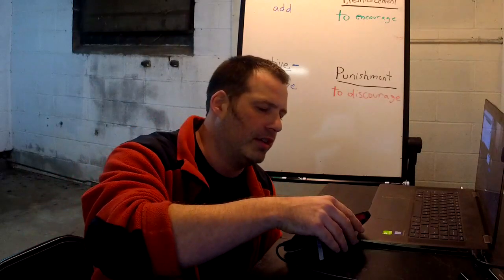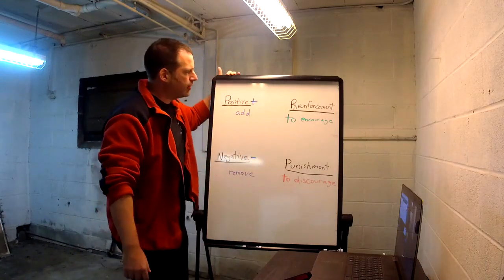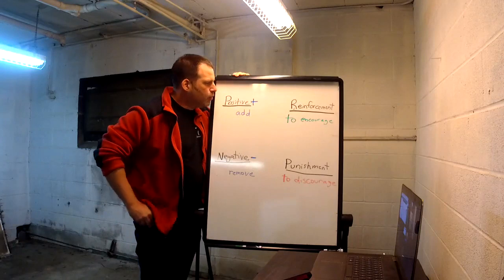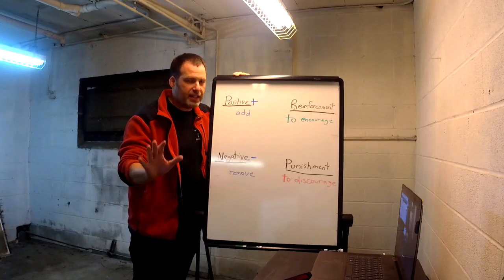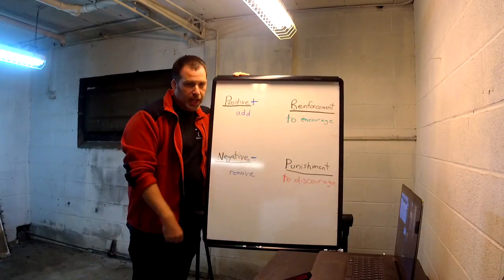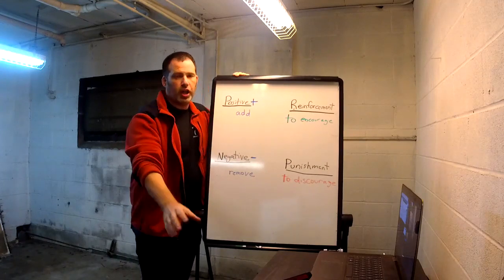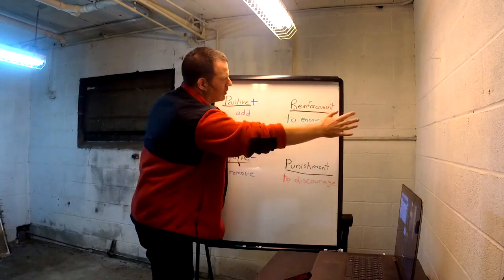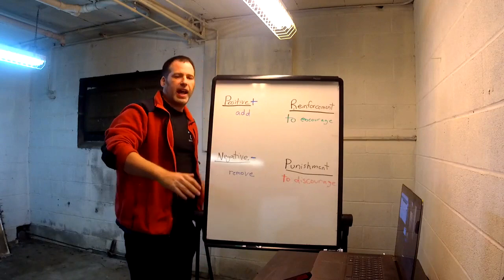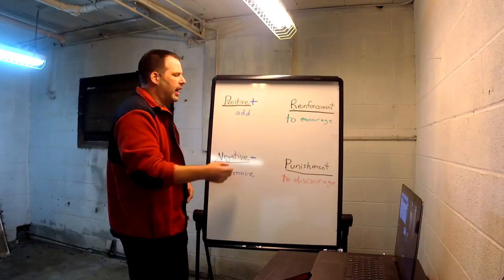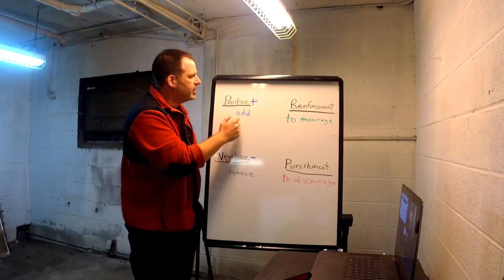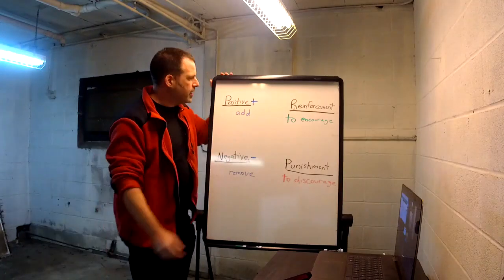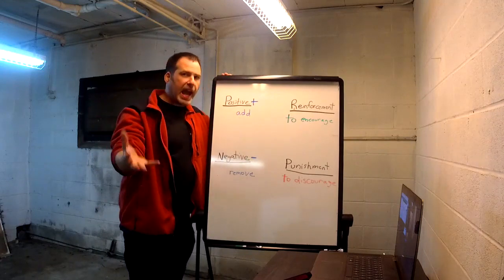Now let's put these together. People always say the four quadrants of operant conditioning. Positive reinforcement — just keep it as 'adding something to encourage.' Think how easy this is: I add a treat to encourage a dog to sit, I add love to encourage a dog to come, I add a tug to encourage the dog to come. Every time you think, am I adding something to encourage? If yes, you are doing positive reinforcement.